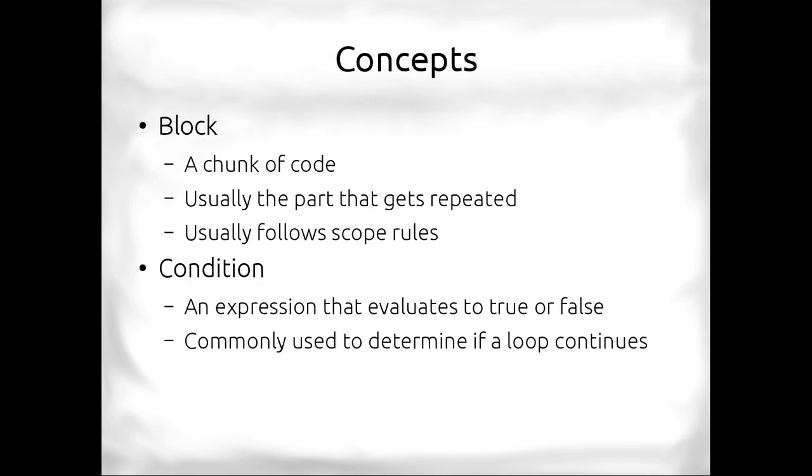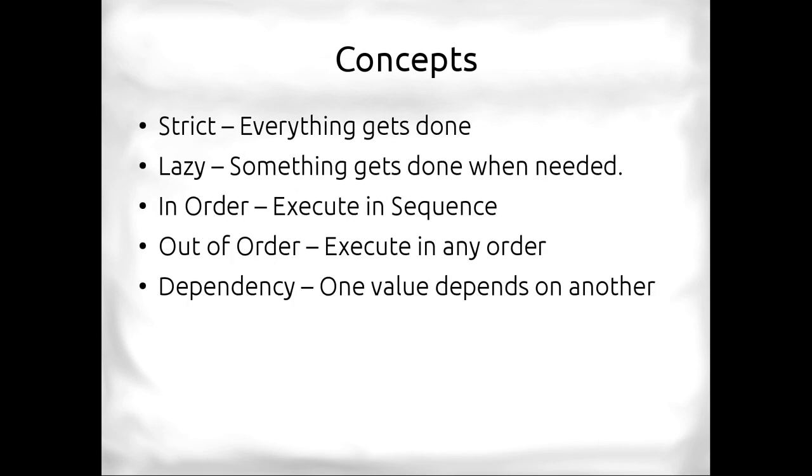For the rest of the talk, I'm going to rely on some concepts. One is a block. A block is a chunk of code, and in Perl, usually a block is something that's surrounded by curly braces. It's usually the part of the code that gets repeated, and it usually follows lexical scope rules, assuming you're strict. A condition is an expression that evaluates to true or false. It's commonly used to determine if a loop continues.